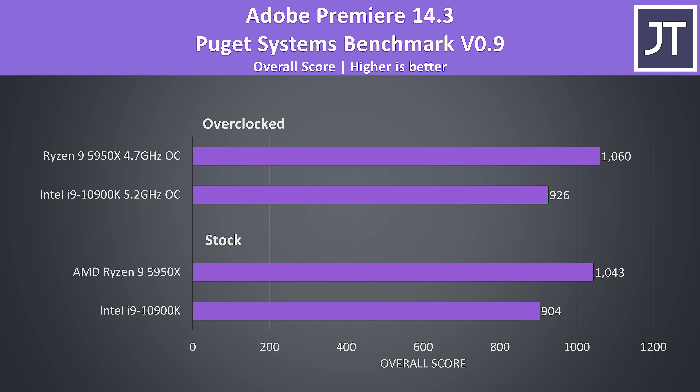I've also tested Adobe Premiere with the Puget Systems benchmark tool, as this tests for more things like live playback rather than just raw export times. The 5950X was ahead in this test too, though the difference was smaller compared to export times with just a 15% lead at stock.